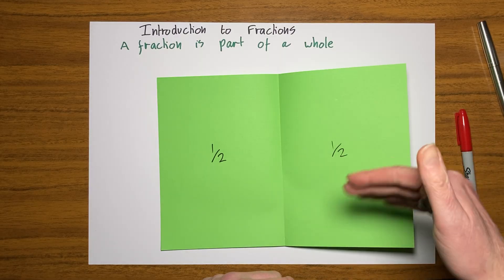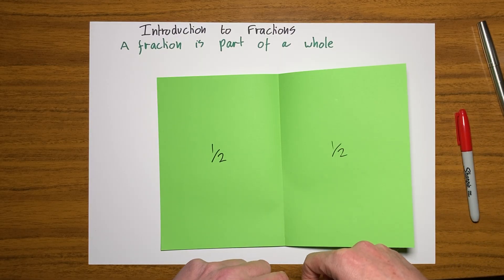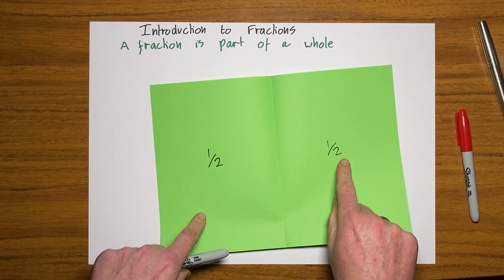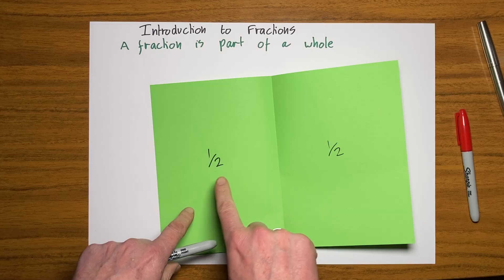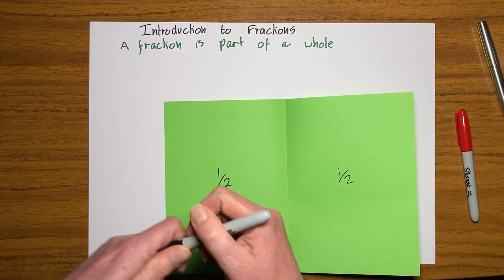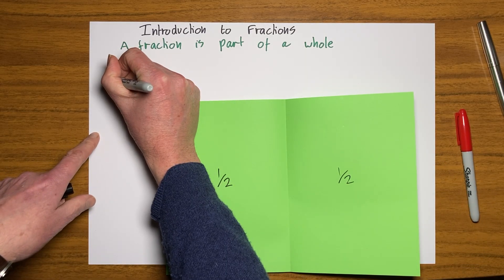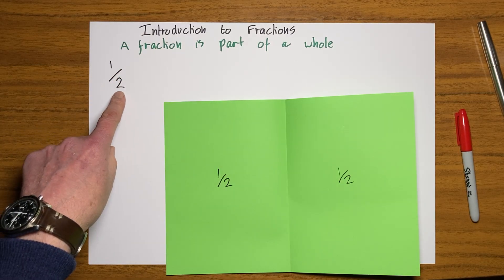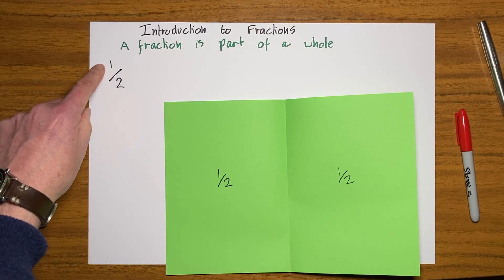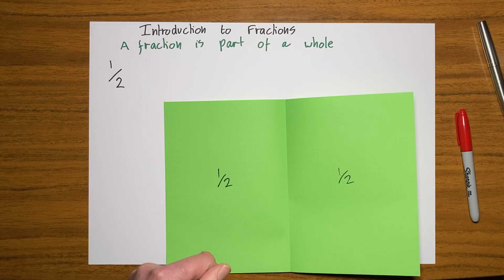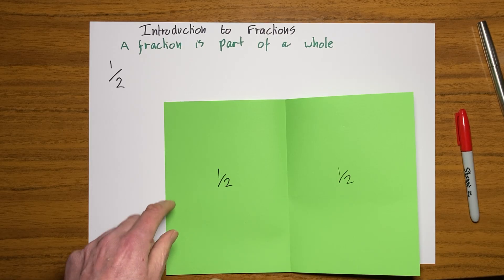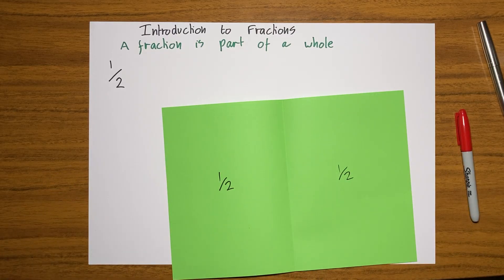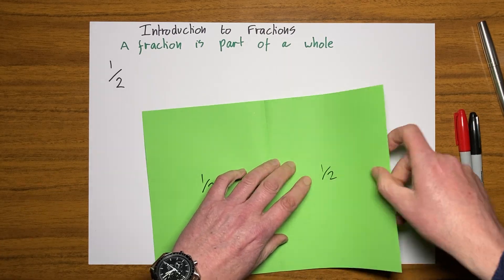And that is the basis of fractions. What it actually means — and we're going to come back to this a lot — is I've got my whole and I have split it into two bits. That is what the bottom number always means. So I'm going to write a fraction — I'm going to write a half here. The bottom number is how many we split it into. And the top number is how many of those actual bits I've got. So this is one part out of two parts.